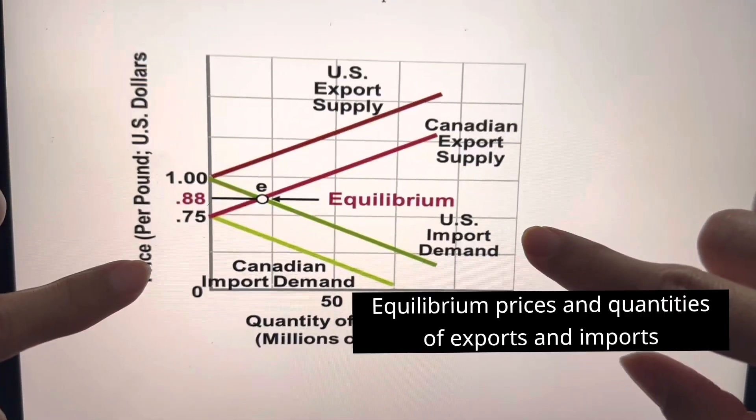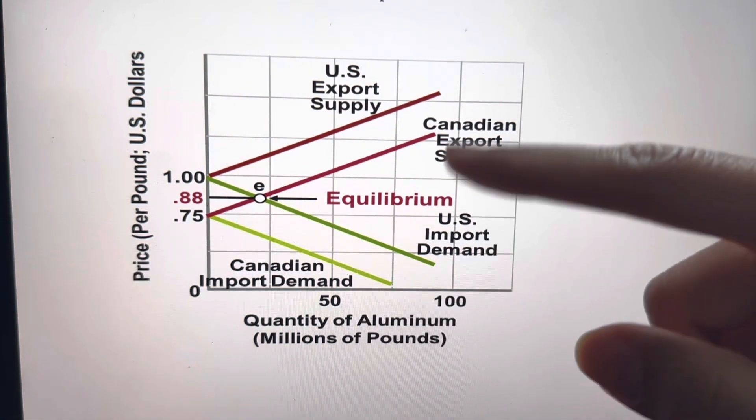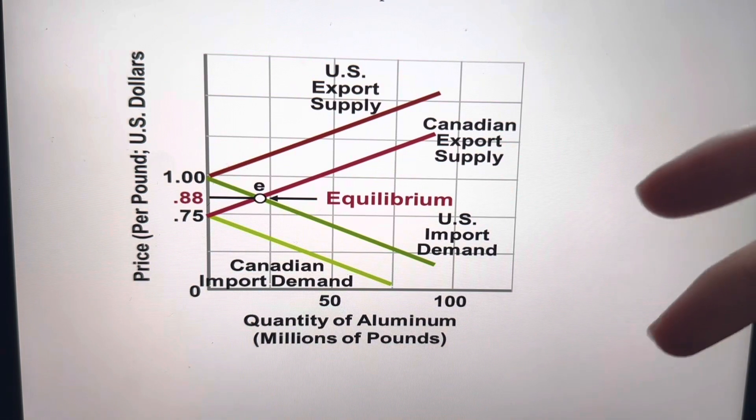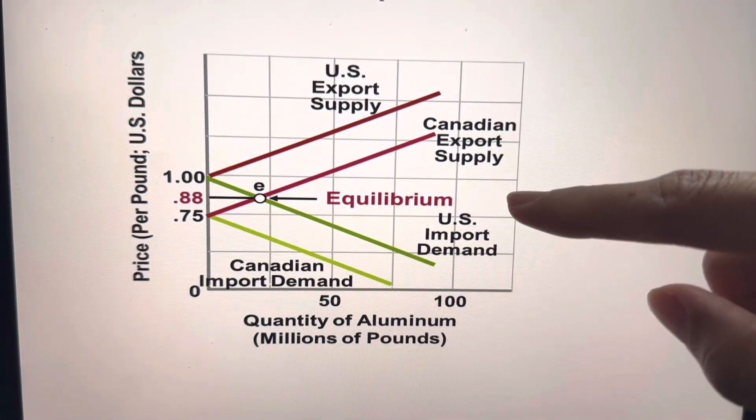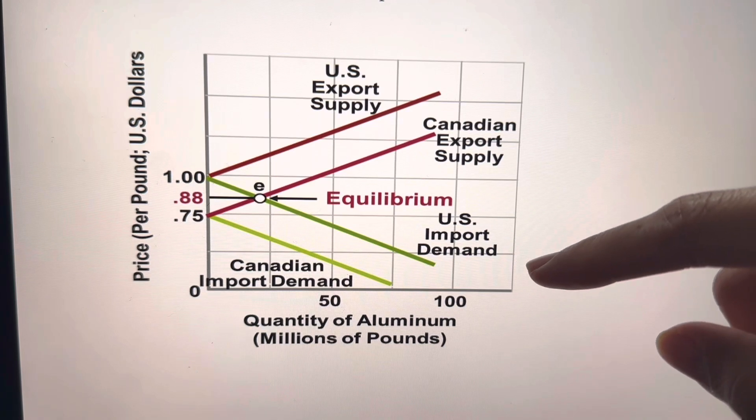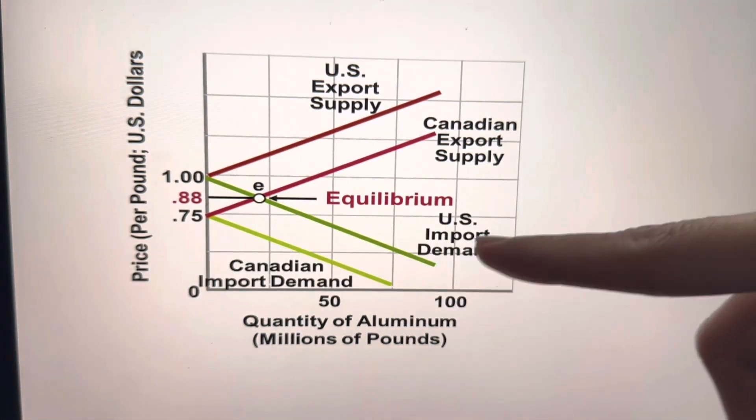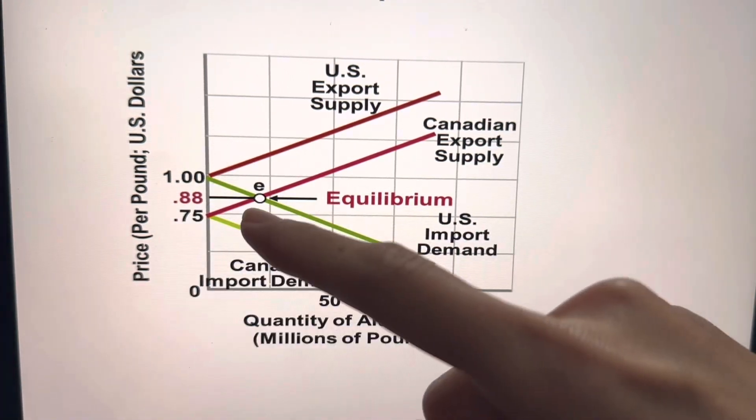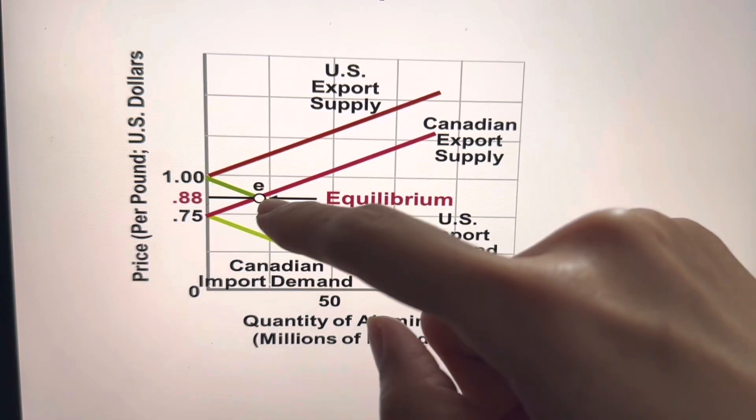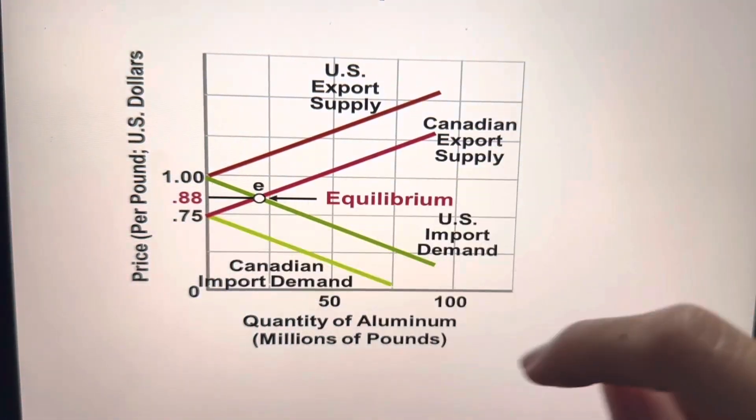To get the equilibrium domestic price here, when we put those import demand and export supply curves together for both countries, here we have U.S. and Canada together, where it intersects. What it means is where the U.S. import demand curve intersects or crosses the Canadian export supply curve, we will have the equilibrium price, which is 88 cents.